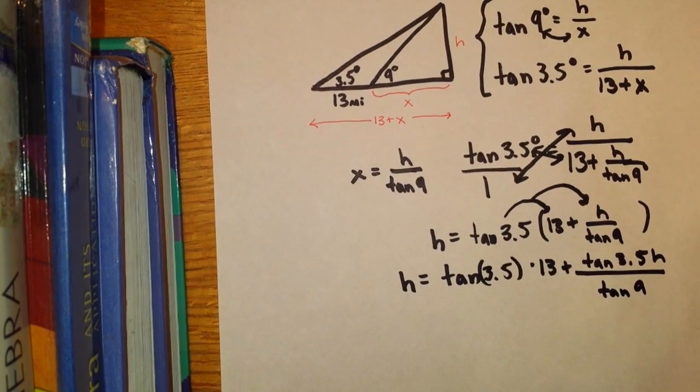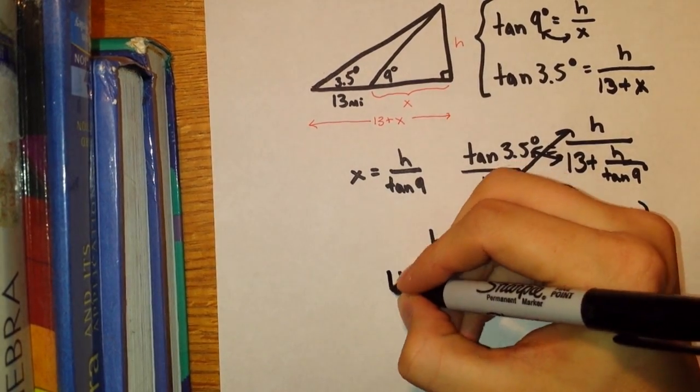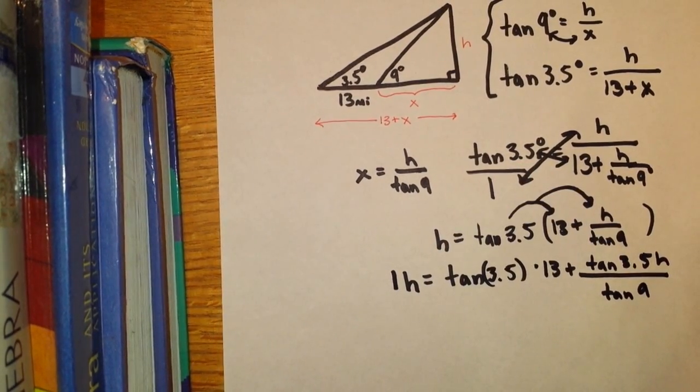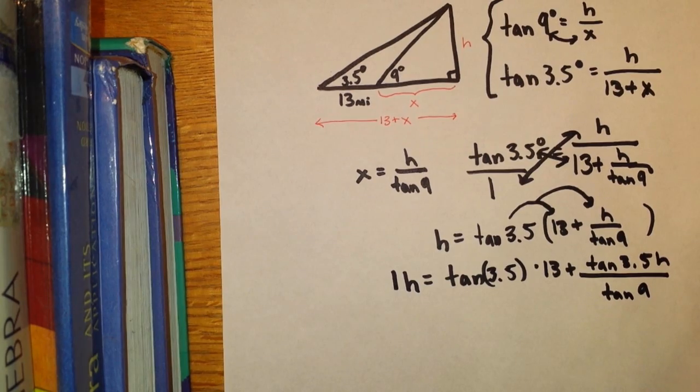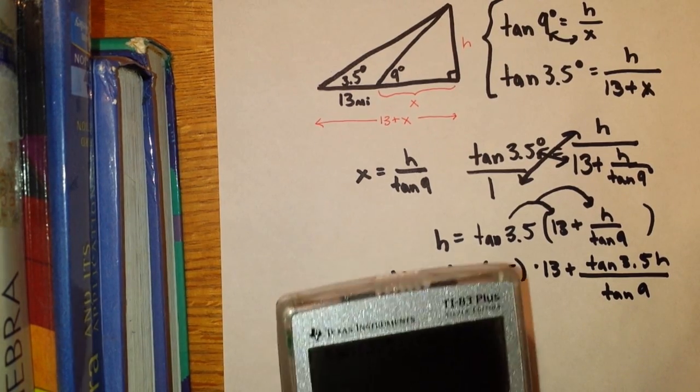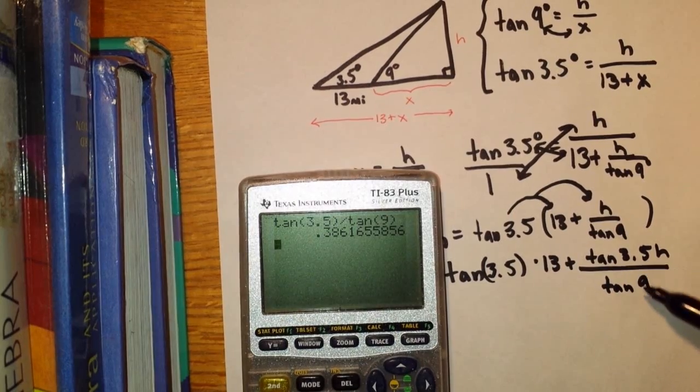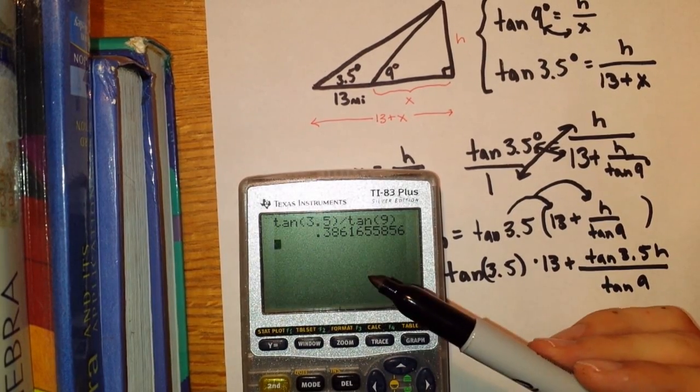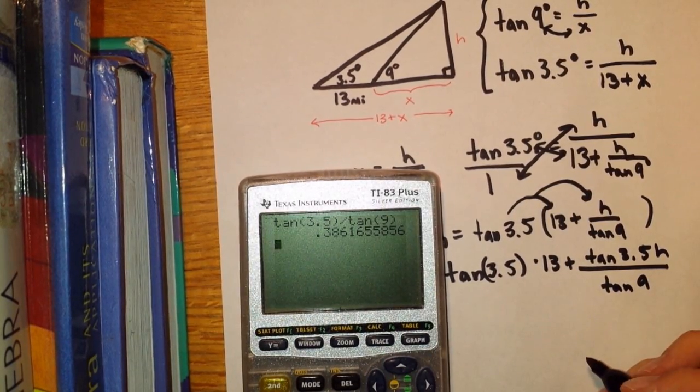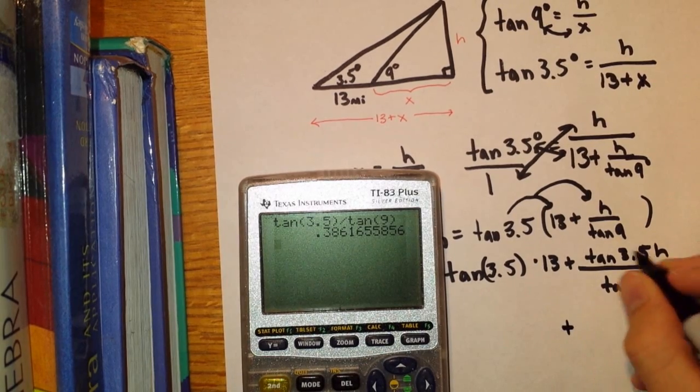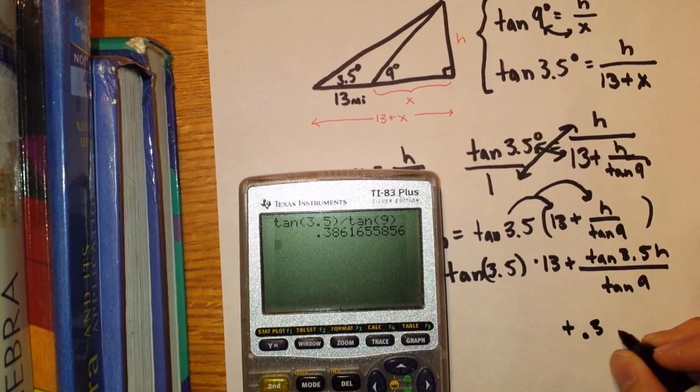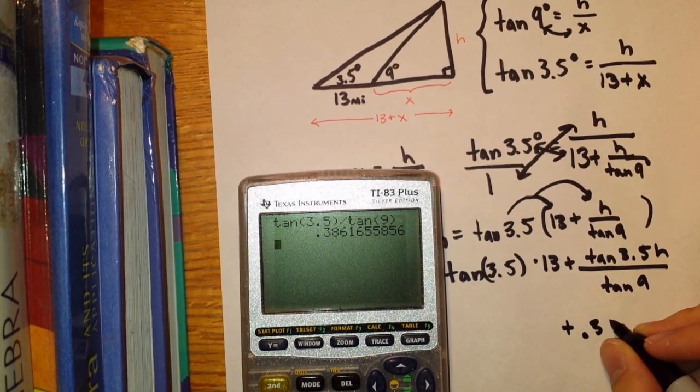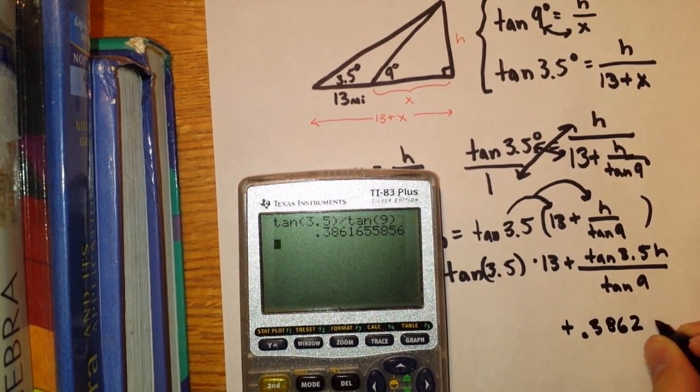I would like to wait as long as possible before typing these in my calculator. Anytime we type any of these in the calculator and give a decimal approximation, we're dealing with rounding errors. At this time, for purposes of this, it may be beneficial to compute tangent of 3.5 over tangent of 9. And I'm going to round to four decimal places. So I'm going to say that this expression here is equal to about 0.3862h.